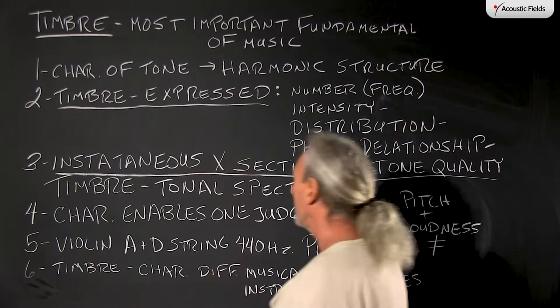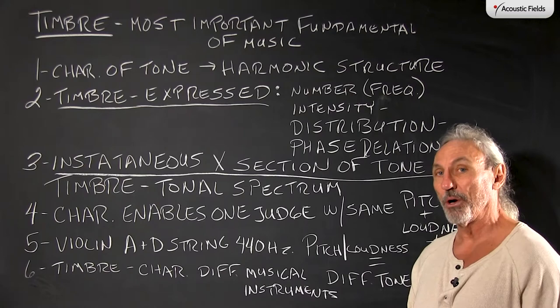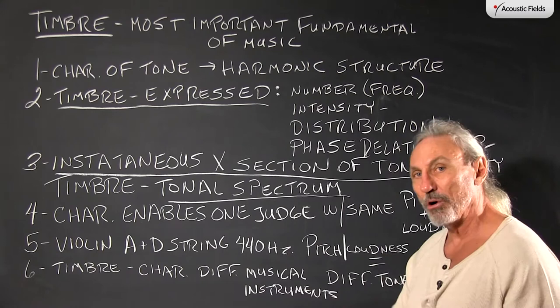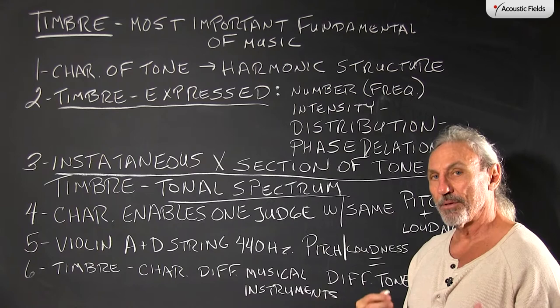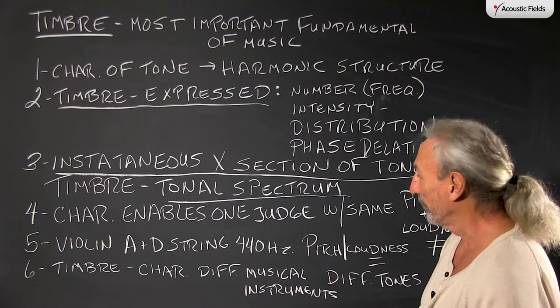Timbre is an instantaneous cross-section of tone quality — you know it immediately. It's different than pitch. A lot of singers have good pitch, some don't, and you can recognize that immediately. But timbre is all about a tonal spectrum. It's a distribution, a phase relationship of tone quality. So we're trying to get a handle on that quality in our rooms when we design and treat for them, and we know that includes room size and volume, pressure levels, and a lot of other variables.